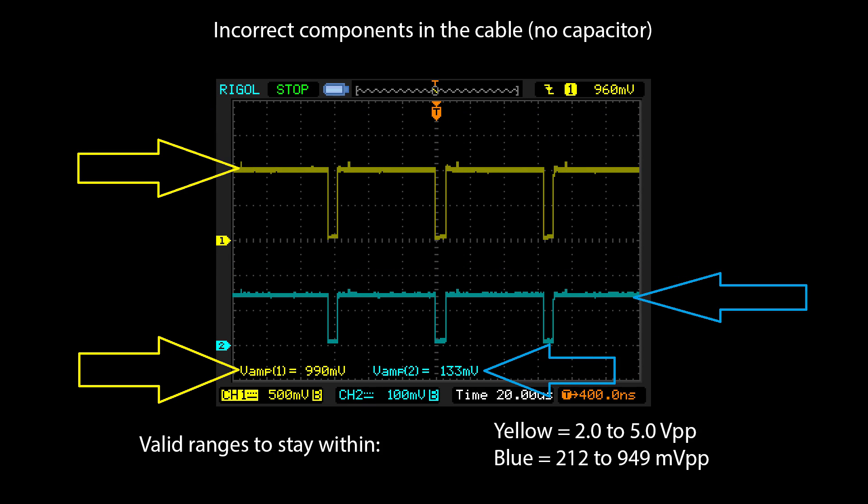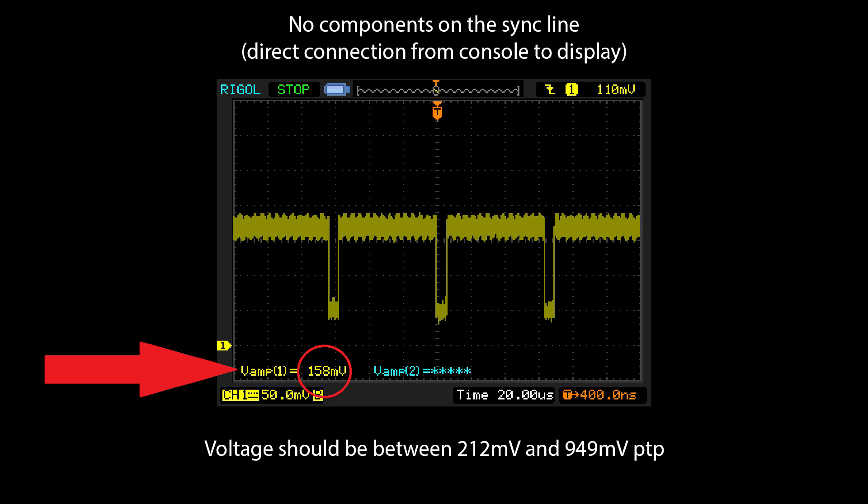In comparison, this picture shows what happens when there's only a resistor and not a capacitor on the line. As you can see, both waveforms fall below the spec. And finally, here's a scope capture with no components at all on the line, just a direct connection between the console and the SCART sync pin.